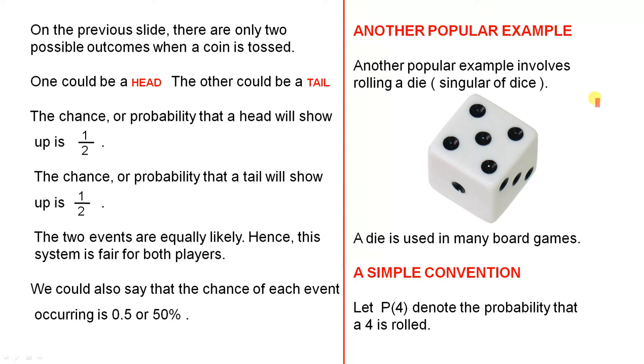Another popular example. Another popular example involves rolling a die, which is singular of dice. A die is used in many board games. Now here's a simple convention. Let P(4) denote the probability that a 4 is rolled. So when you see a P with a 4 inside the parentheses or brackets, that means the probability that a 4 is rolled.